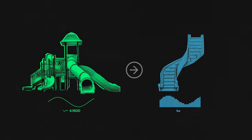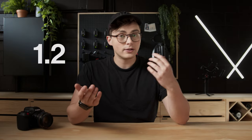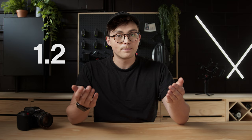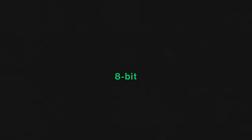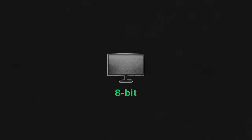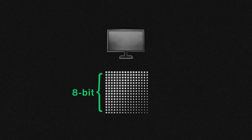Think about it as turning an analog slide into a digital staircase — less fun, but more useful. Say we have a value of 1.2 and only 1 and 2 are available; the camera will round down and give it a value of 1. The number of these available values is called bit depth. 8-bit, which is the standard for computer displays and monitors, has 256 available values.